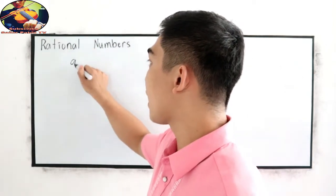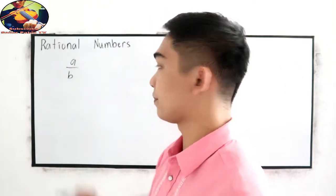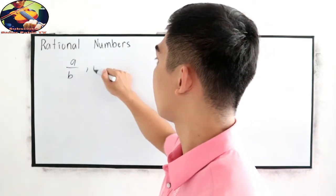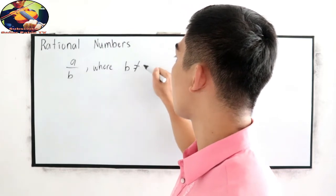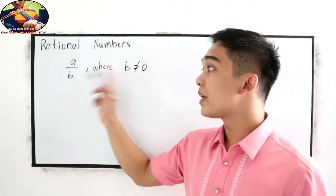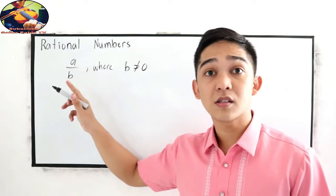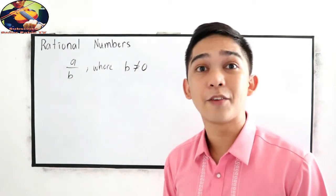The word 'rationale' is derived from the word 'ratio,' which means quotient. Rational numbers are numbers which can be written as a quotient in the form a over b, where b must not be equal to zero — because if b is zero, that will give us undefined.